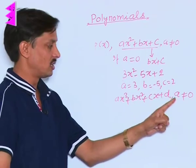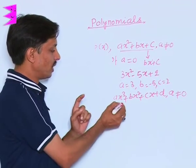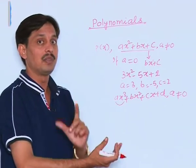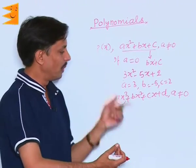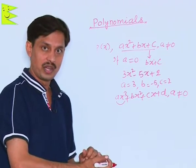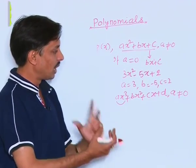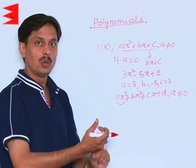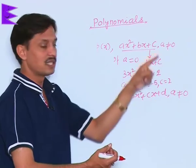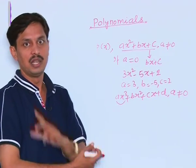Again the reason is the same. If A will be 0, this term will eliminate and the left part will have degree 2. So it will not be cubic, it will become quadratic. That is why my purpose is to tell you, always remember standard form with the necessary conditions.